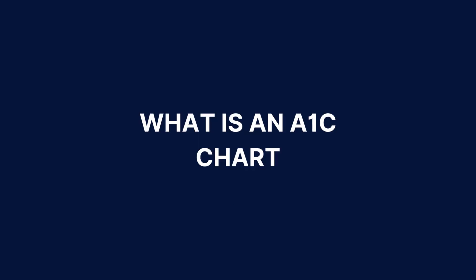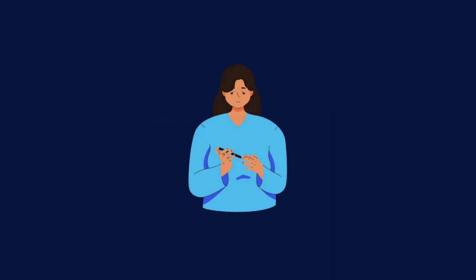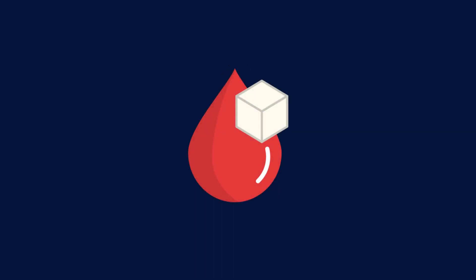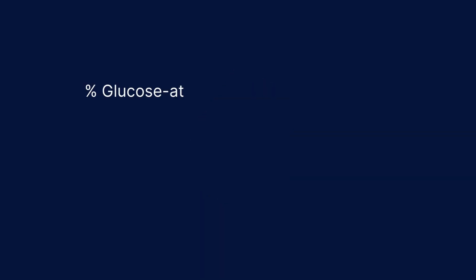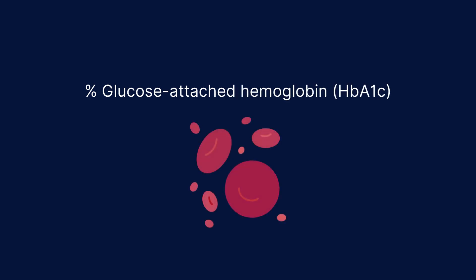So what is an A1C chart? An A1C level chart is used to monitor average blood glucose levels over the past two to three months. It is based on the A1C test, which measures the percentage of glucose-attached hemoglobin, or HbA1C, in an individual's red blood cells.